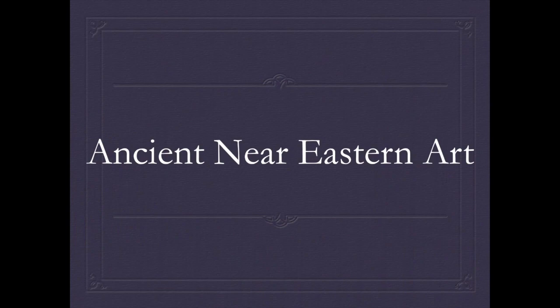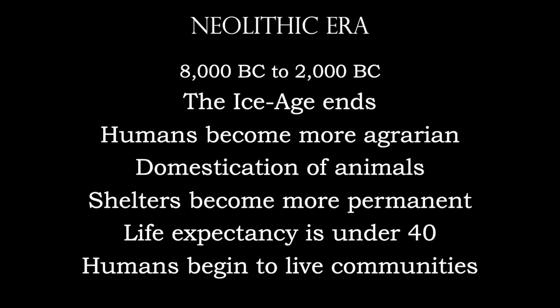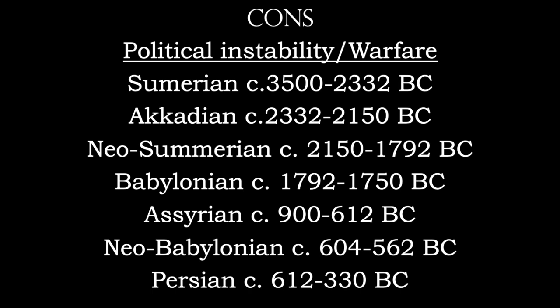From here we talked about the Ancient Near East, the area mostly between the Tigris and Euphrates River — the Fertile Crescent. This is also during the Neolithic Age. Many things were invented in this area: the wheel and plow, irrigation techniques, writing as in cuneiform, beer, schools, libraries, and written laws. Unfortunately, the biggest disadvantage was political instability and warfare. The Sumerians were taken over by the Akkadians, the Babylonians, the Assyrians, and the Persians.